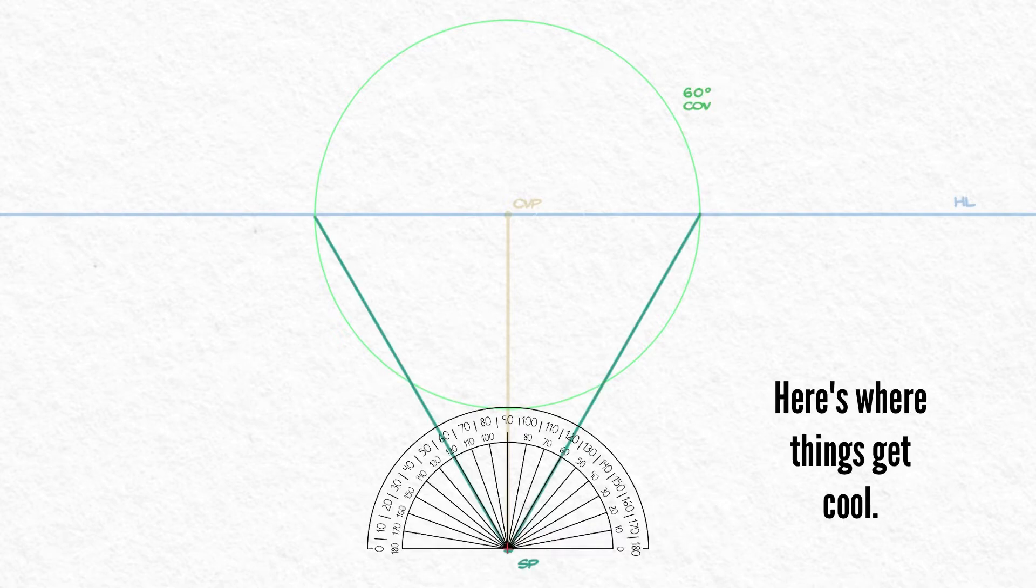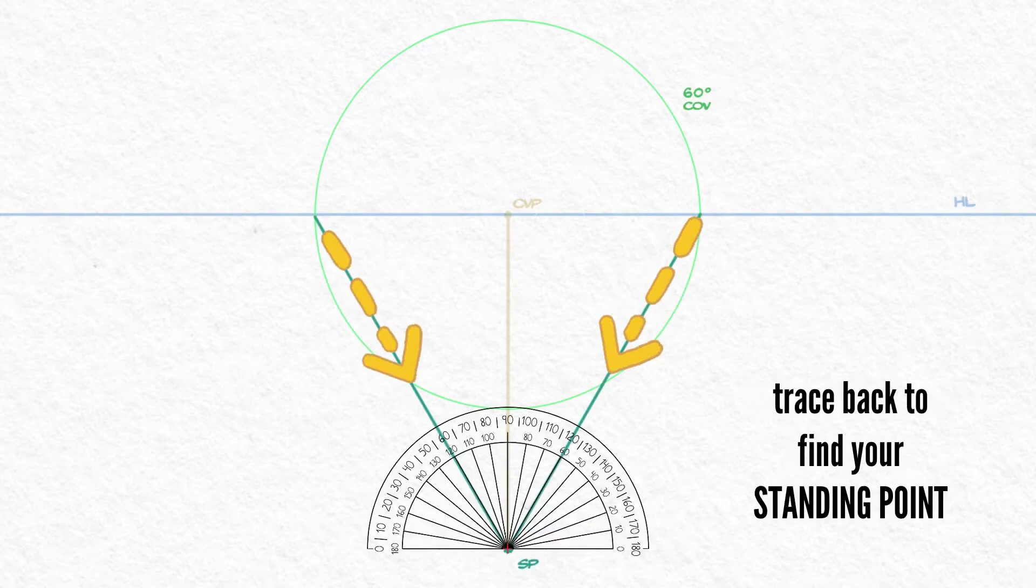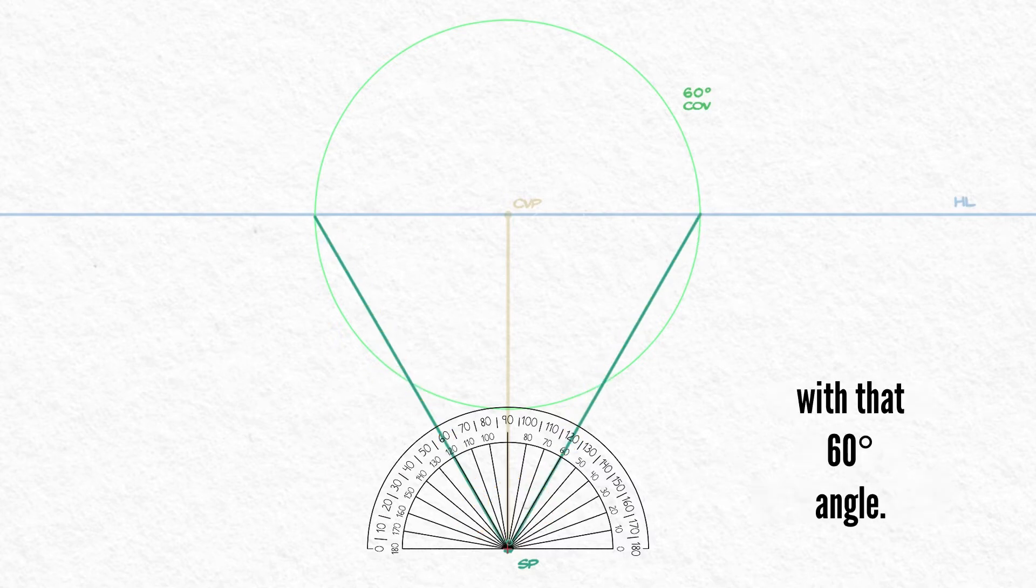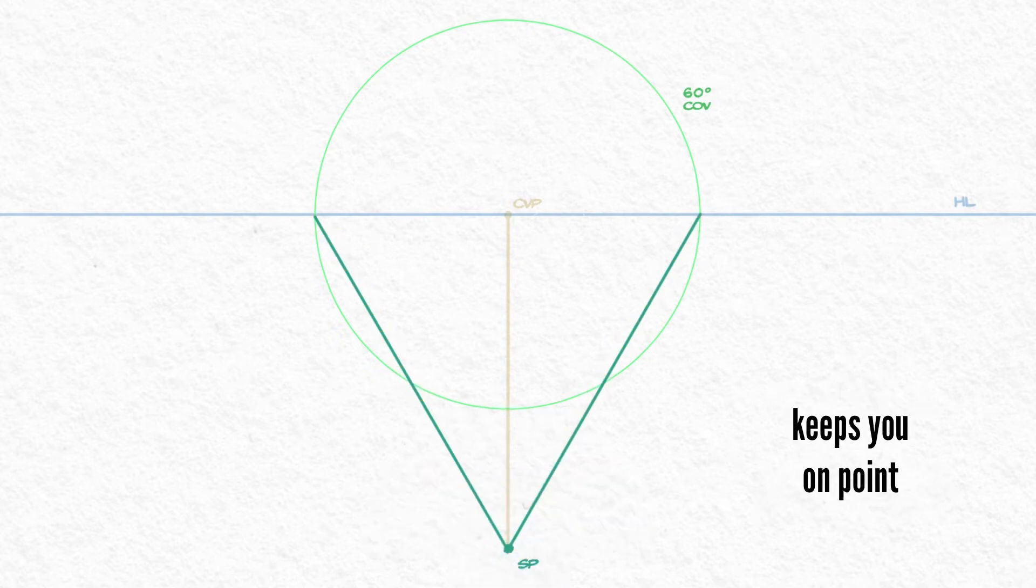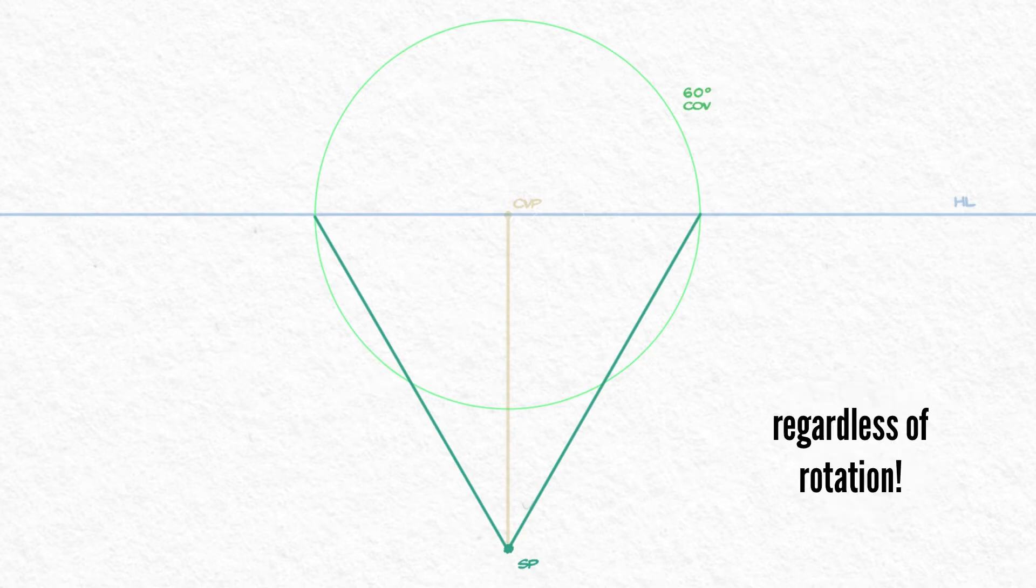Here's where things get cool. From the diameter of your cone of vision, trace back to find your standing point, that 60 degree angle. Your standing point keeps you on point to find any vanishing point, regardless of rotation.